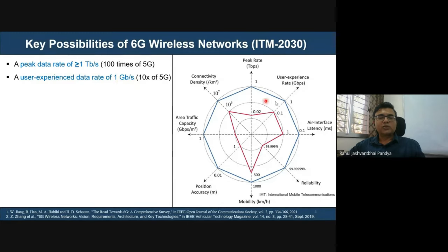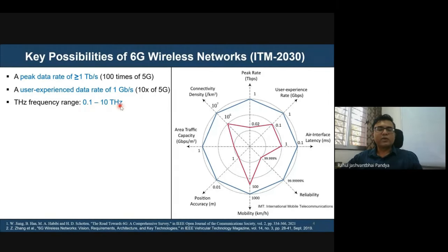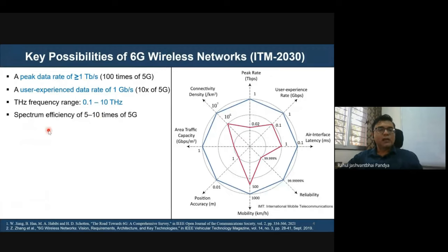The user experience data rate of 1 Gbps is approximately ten times that of 5G, which is substantially higher. 6G will explore terahertz frequencies ranging from 100 GHz to 10 THz. While there are several challenges to address at these frequencies, the advantage is supporting tremendous data rates in the terabits per second range. Spectrum efficiency is targeted at five to ten times that of 5G.